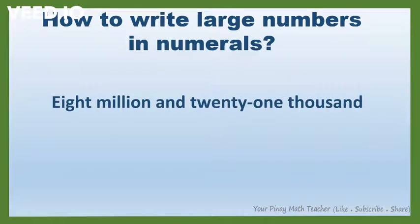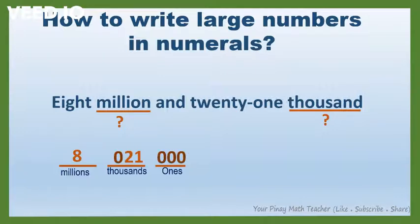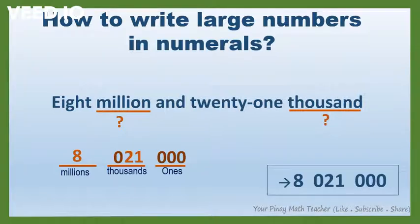Next: 8,021,000. In this number, the highest period is the millions period, which implies that we have three groups of digits or three periods. How many millions are there? There are eight. And there are 21 thousands. But there is none for ones. It follows that we need to add a zero before 21 and put three zeros in the ones period. So, this is the numeral for 8,021,000.